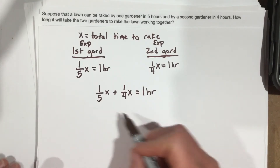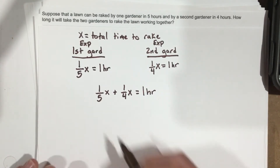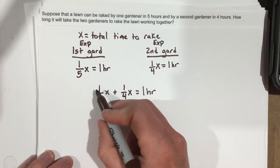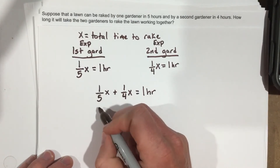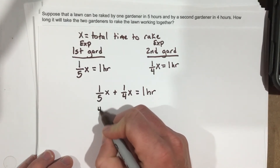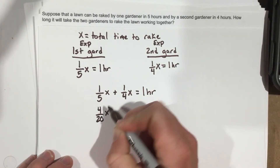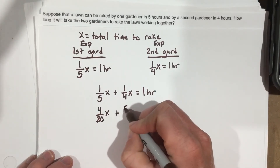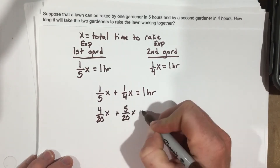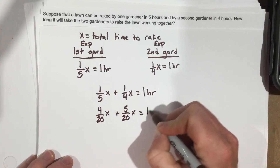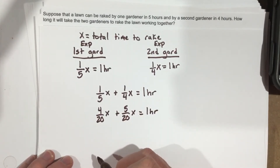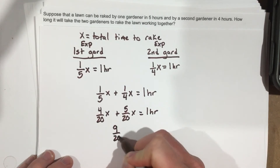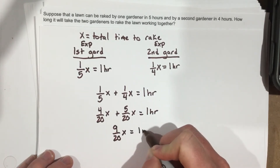So we can take one-fifth x plus one-fourth x and find a common denominator: that would be 4 over 20x plus 5 over 20x equals one. That gives us 9 over 20x equals one hour.